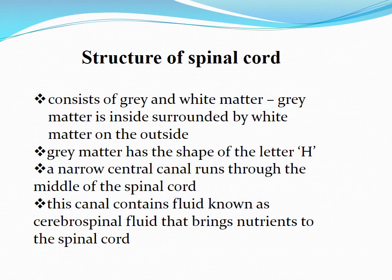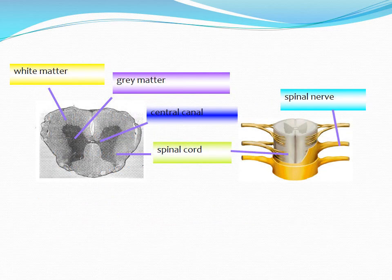The spinal cord consists of two portions: gray matter and white matter. Gray matter is inside, surrounded by white matter outside. This is the key difference between the brain and the spinal cord. Gray matter has the shape of the letter H, and the narrow central canal runs through the middle of the spinal cord. This canal contains cerebrospinal fluid, which is responsible for providing nutrients and nourishment to the spinal cord. In the diagram you can see the H-shaped gray matter at the center with the central canal, and white matter surrounding it on the outside.